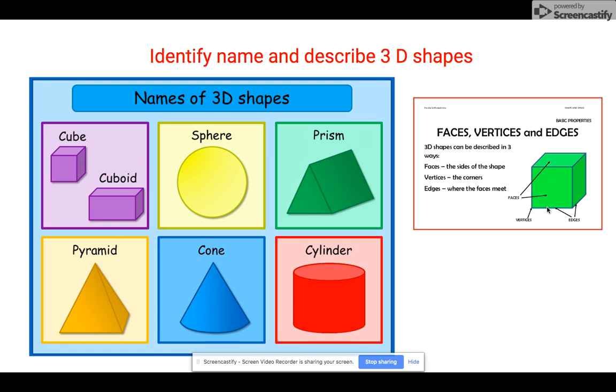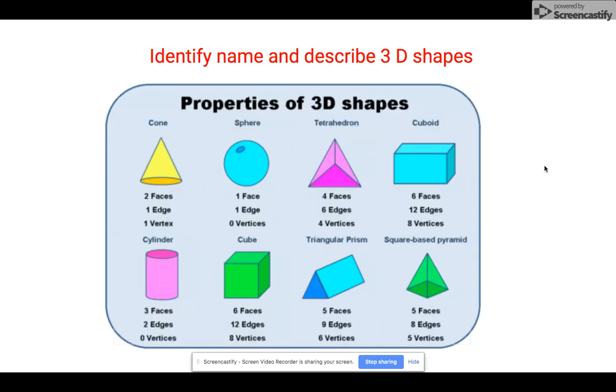And the edges are the last thing that we would use to be able to describe and explain your 3D shape. The arrows are pointing to the different types of edges. Here is a picture and image showing some different 3D shapes.